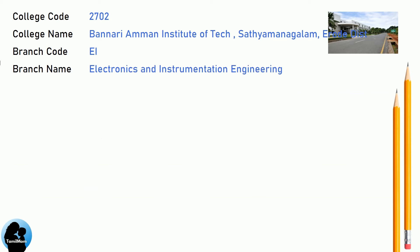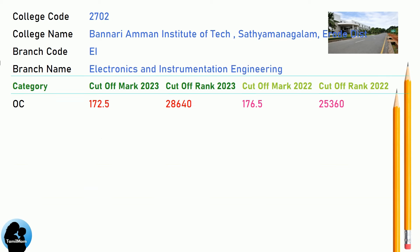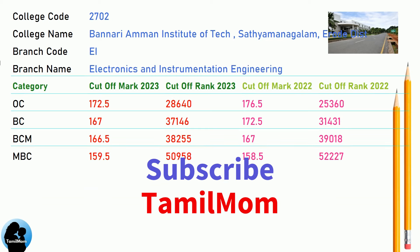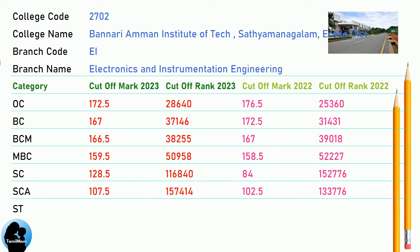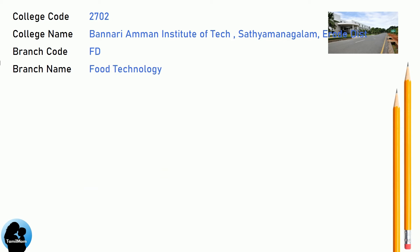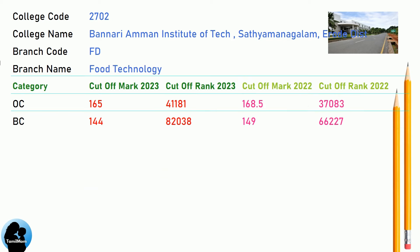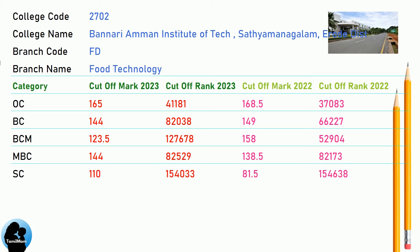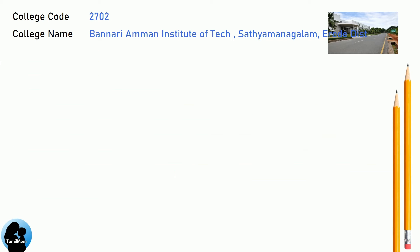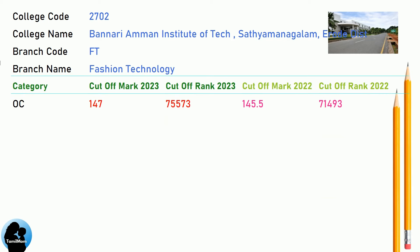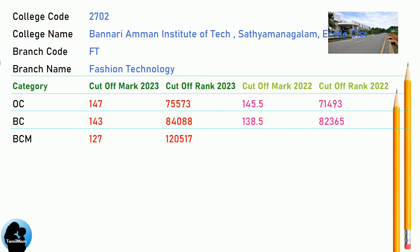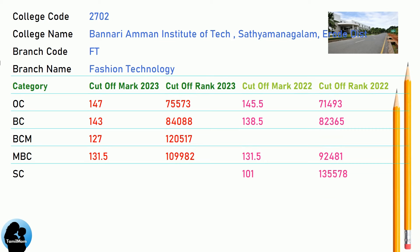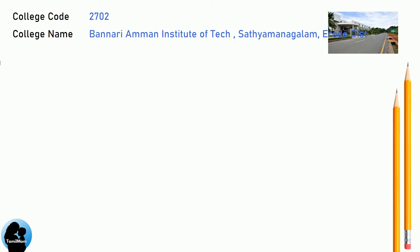Cut-off marks for Food Technology. Cut-off marks for Information Technology, covering multiple category rows.